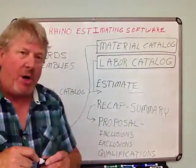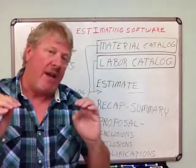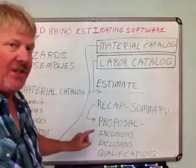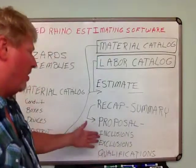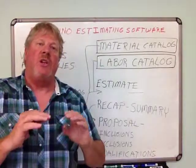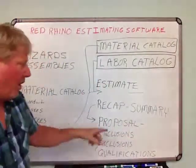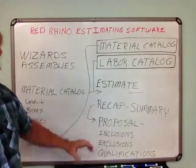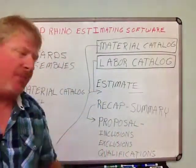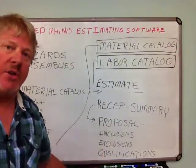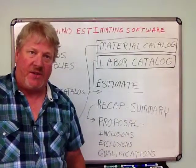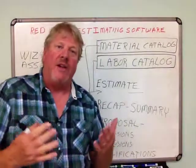The cool thing about the proposal is we have boilerplates in there for you — boilerplates for inclusions, exclusions, and qualifications. The proposal is a deliverable that goes to your client. The numbers flow from the recap to the proposal to show the total dollars your bid is, and then you explain what's included. Inclusions means what's included in the price, exclusions is what's excluded, and qualifications is where you qualify your bid.